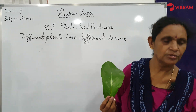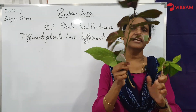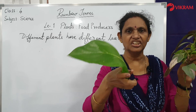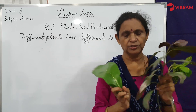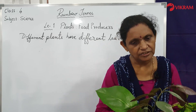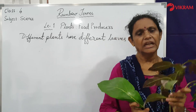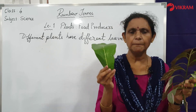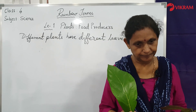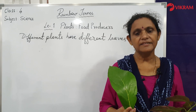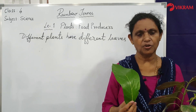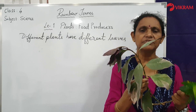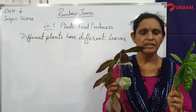Different leaves have different colors. As you can see, some have different colors and some have a greenish color. Green leaves derive their color from a green pigment called chlorophyll. The presence of additional pigments causes different leaf colors.